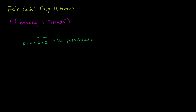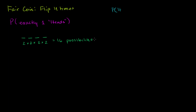Any one of those possible outcomes has a probability of 1 out of 16. For example, if I just take some specific sequence that has three heads, getting exactly that sequence is exactly 1 out of a possible 16 events. Now, with that out of the way, let's think about how many of those 16 possibilities involve getting exactly one heads.